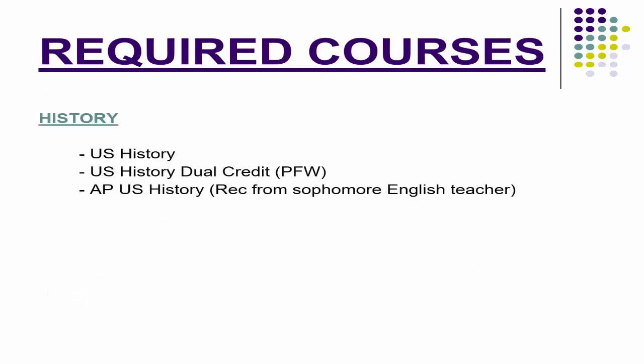Continuing with required courses: History is your next required course. There are three options for juniors next year. You can take regular U.S. History — two semesters of it. Or you can take the dual credit U.S. History course, also two semesters, through Purdue Fort Wayne but held at Carroll. Or you can take the AP version of U.S. History, for which you need a recommendation from your sophomore English teacher.